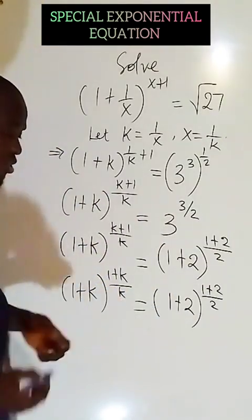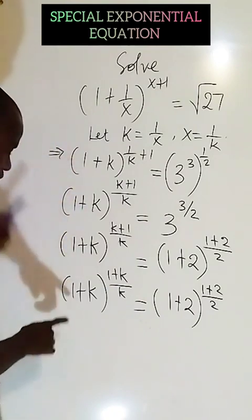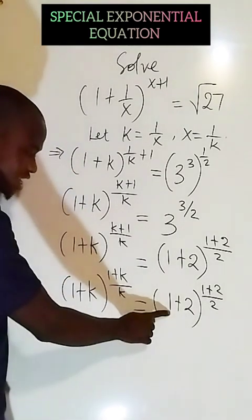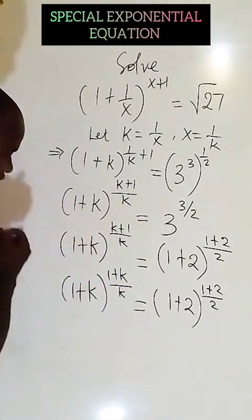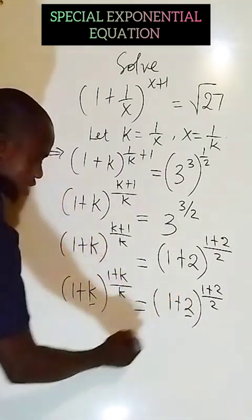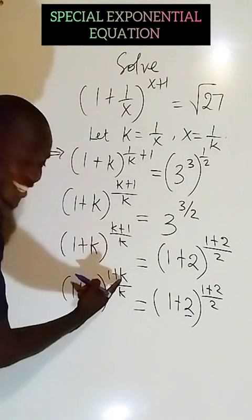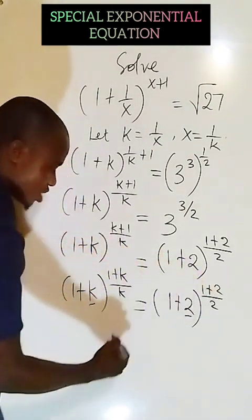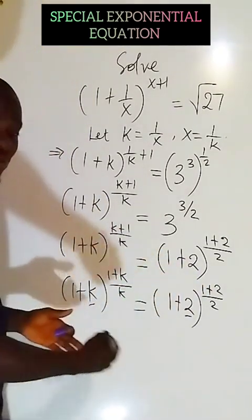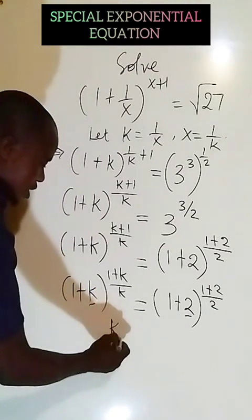Now when you look at the two sides of this equation, you can see they are similar. Look at 1 here, I have 1 here. Look at k here, we have 2 here. So we can see that, look at this k here, we have 2 here. Look at the k here, and we have 2 here. So now when you try to compare the two sides of the equation, we're going to see that k equals to 2.